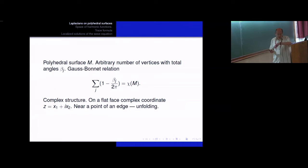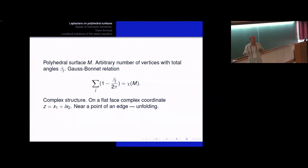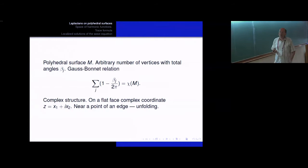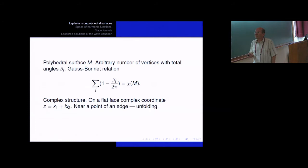Now I am going to define the Laplace operator on such a polyhedron. In order to do this, I have first to introduce the smooth structure — the smooth coordinates on this polyhedron. The first remark is that in spite of the fact that we have a polyhedron with edges and vertices, we really deal with a completely smooth surface, and moreover, we deal with a complex analytic surface. This means there is a natural complex structure on such a polyhedron.